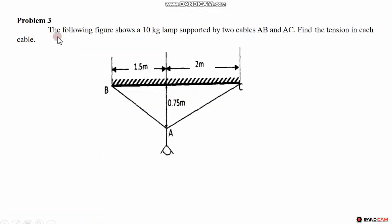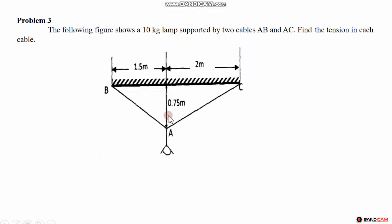First, this is a simple problem. The following figure shows a 10 kg lamp supported by 2 cables AB and AC. Find the tensions in each cable. In this case, a practical application is available — the lamp is stable and hanging. If it is stable, it will be in equilibrium.